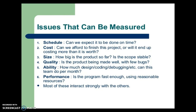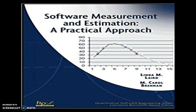Schedule: can we expect it to be done on time? Cost: can we afford to finish this project, or will it end up costing more than it is worth? Size: how big is the product so far — is the scope stable? Quality: is the product being made well with few bugs? Ability: how much design, coding and debugging can this team do per month? Performance: is the program fast enough using reasonable resources? Most of these interact strongly with the others.